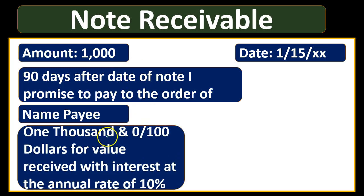The other component will be the interest. We're going to pay $1,000 for value received with interest at the annual rate of 10%. So there are two components of what's going to be paid: one, the principal component — kind of like the loan that we gave. We didn't loan out dollars directly, but we sold something with a sticker price of a thousand, didn't get paid at the point of sale, and are in essence loaning this money to the customer. We're going to get paid that money at the end of the 90-day loan term and we're going to get paid interest on top of the loan.